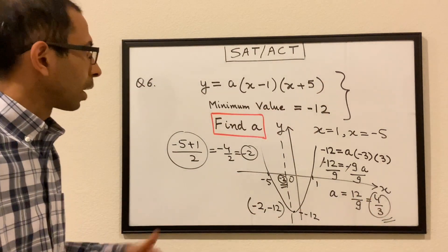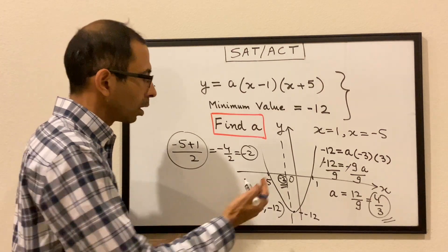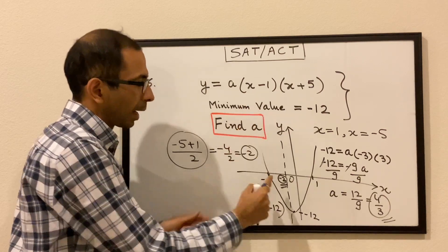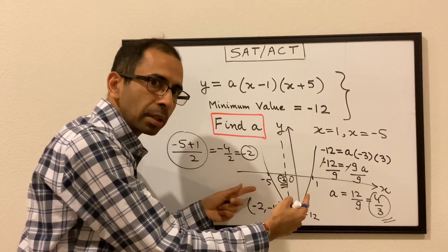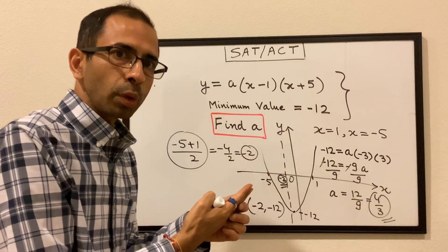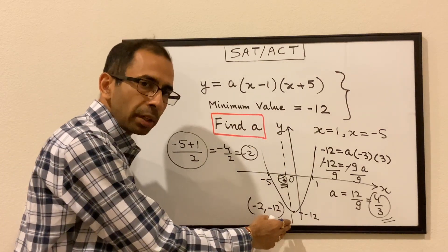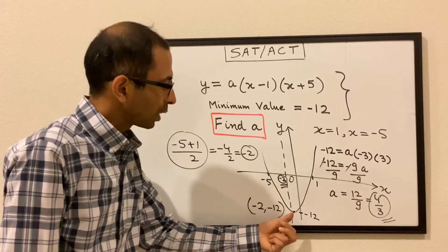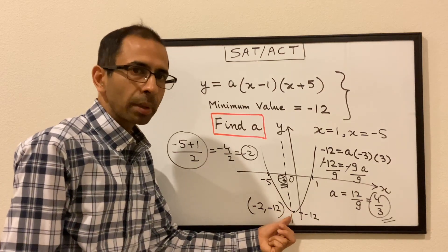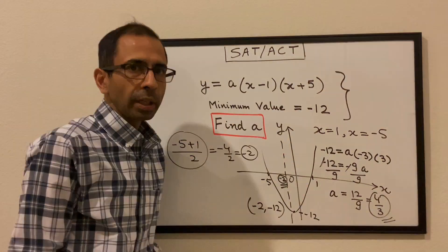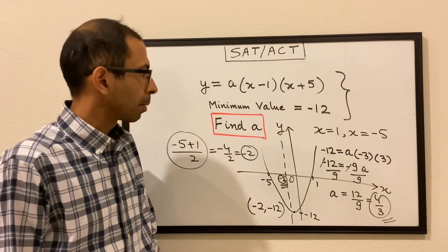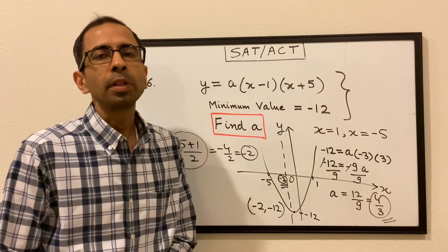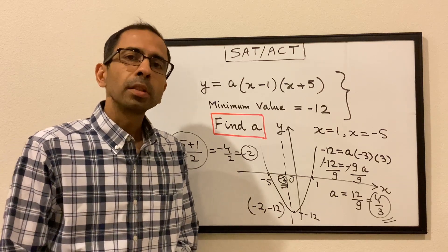To reiterate: we were given the minimum value as the y-coordinate of the vertex, and the two x-intercepts. We found the x-coordinate of the vertex by taking the midpoint of the roots, giving us the vertex point (minus 2, minus 12). Plugging that into the equation and solving gave us a equals 4 over 3. Hopefully you liked the video and found the examples useful. For any questions, reach out at info.mathletes@gmail.com. See you in the next session.